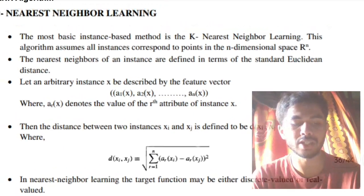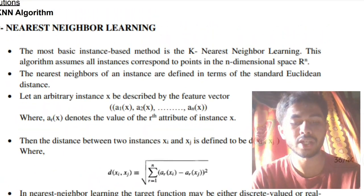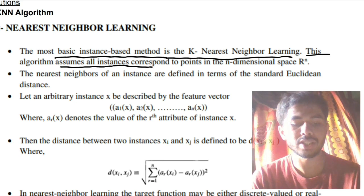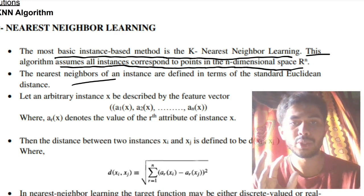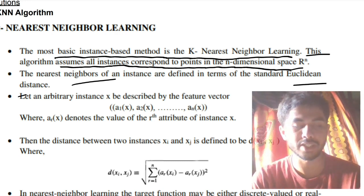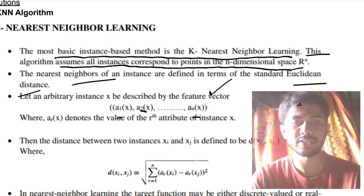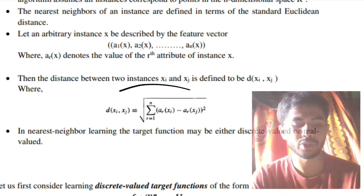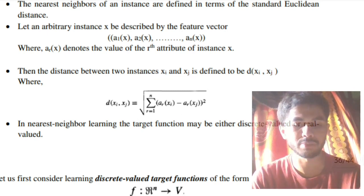First thing you need to write in the KNN learning algorithm is that the most basic instance-based method is KNN learning algorithm. This algorithm assumes all instances correspond to points in the n-dimensional space R^n. The nearest neighbors are classified using distances calculated by Euclidean distance, and each instance will have some attributes known as feature vectors: a1(x), a2(x), a3(x) till an(x). The distances are calculated using the Euclidean distance formula. These four points you have to write in the first part.